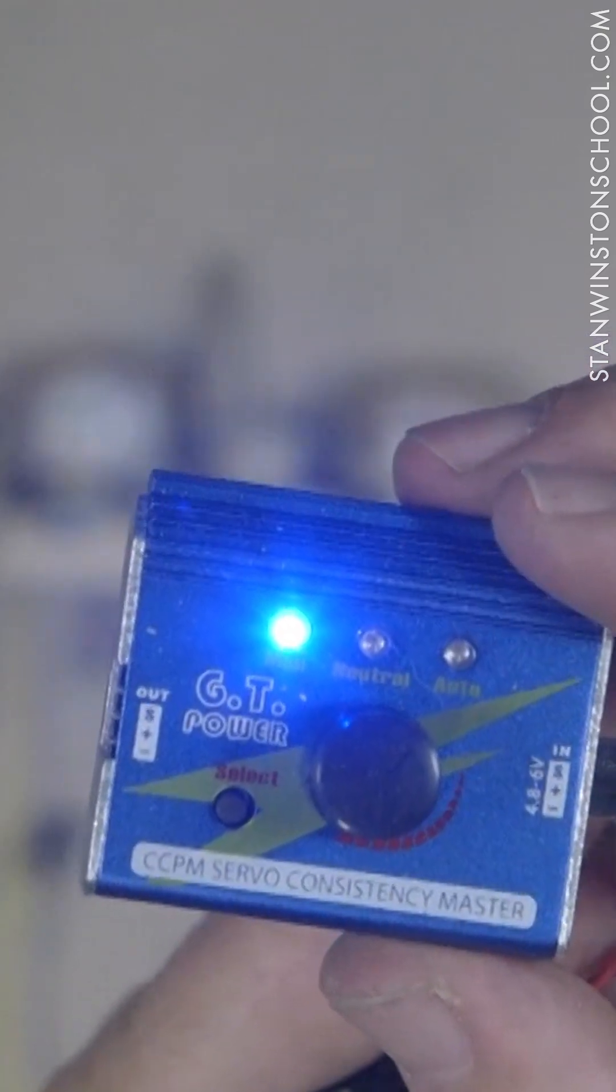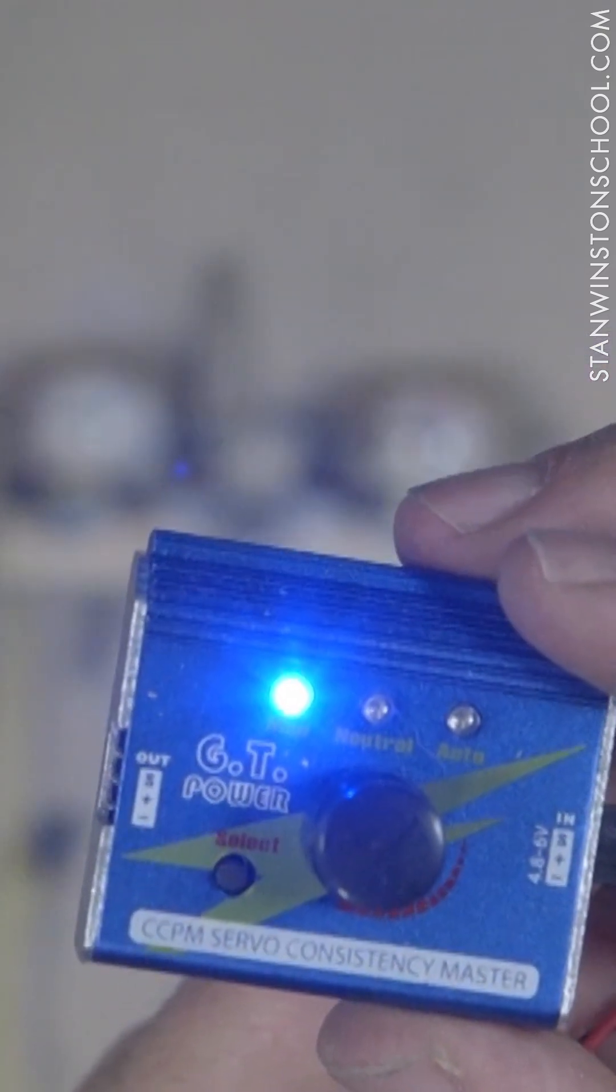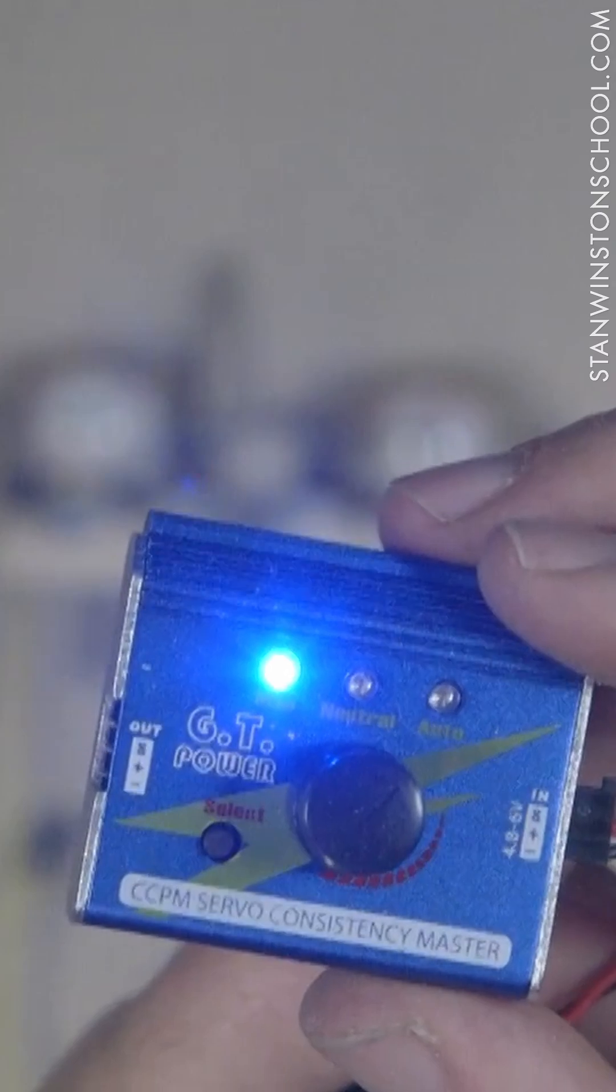So there you can see the top one is little S for signal, and then the positive and the negative for the ground.